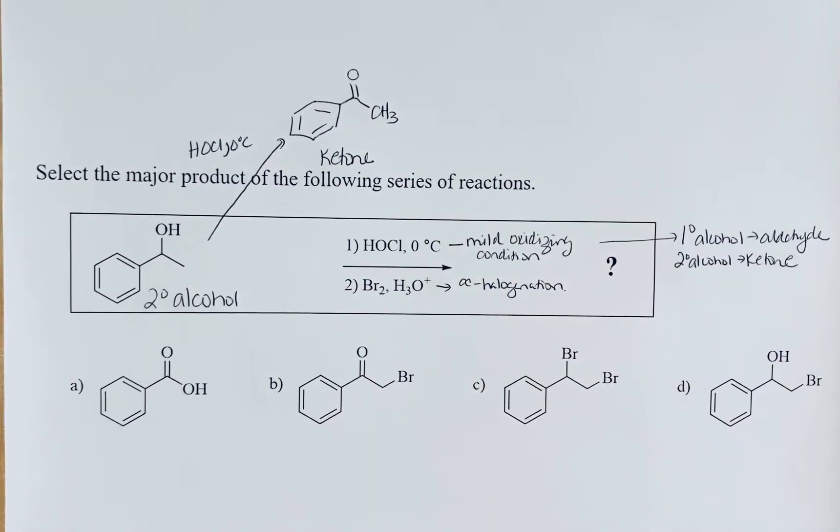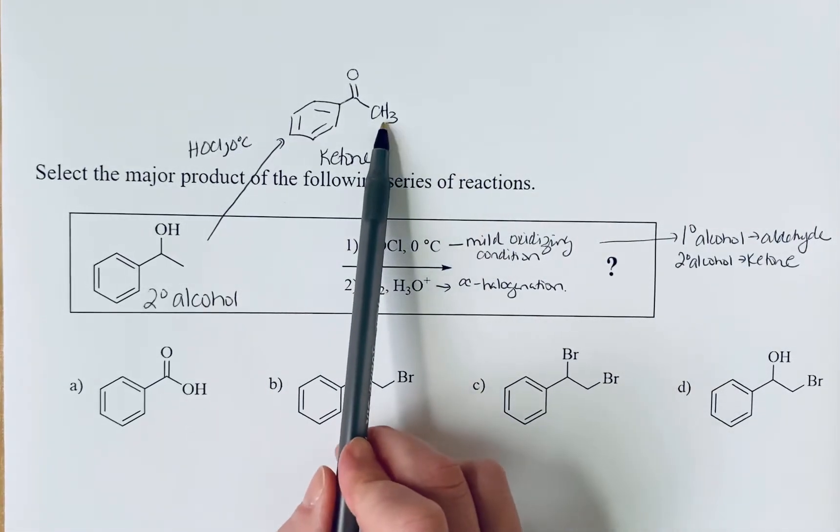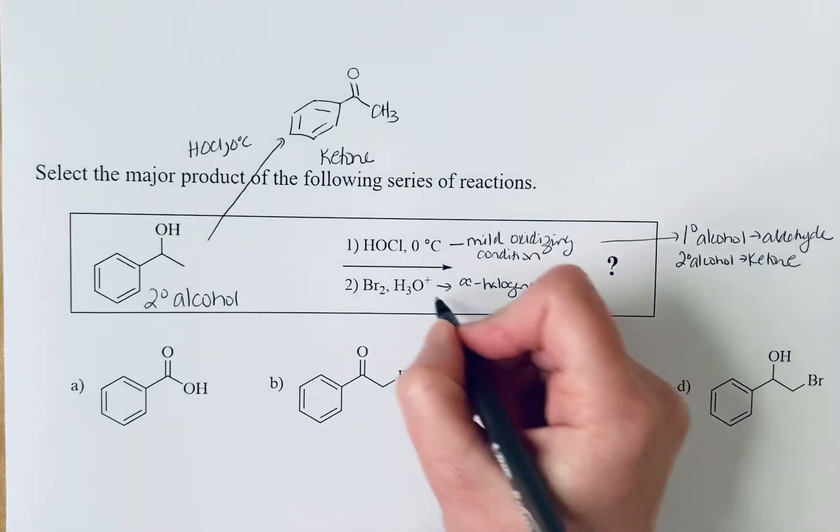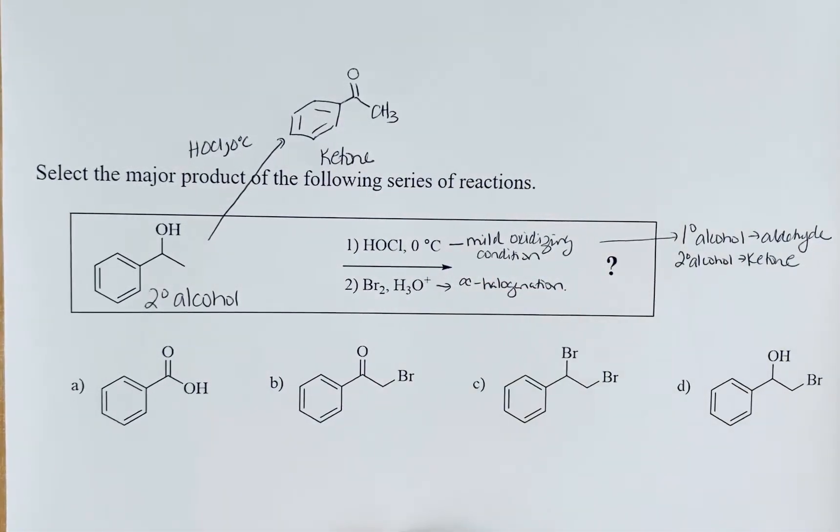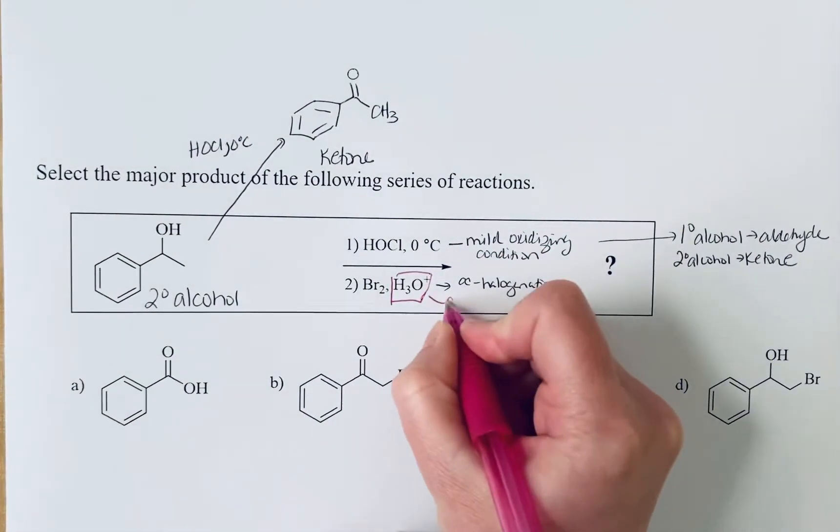What we need to know is under acidic conditions how many of these alpha hydrogens are going to be replaced with your halogens and under acidic conditions is where we can control this reaction. We can add just one bromine to the alpha position and that is because of the fact that it's acidic. So that's key to this step is that it's acidic.